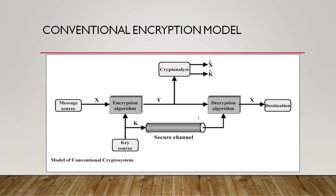In between the sending and receiving of messages, information is linked through a secure channel. Within this channel there is a chance for cryptanalysis, done by cryptanalysts — usually hackers who want to know what message was sent. After going through the secure channel, the decryption algorithm converts ciphertext Y back to letter X, which represents the plain text to be received by the receiver.